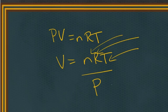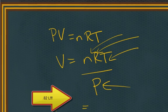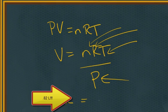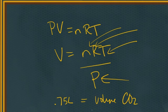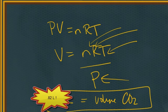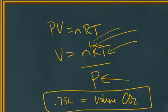And when I plug all those values in, I also get 0.75 liters for my volume of carbon dioxide needed to make one gram of glucose. So either way is fine, whichever way you're more comfortable doing will get you to the right answer.